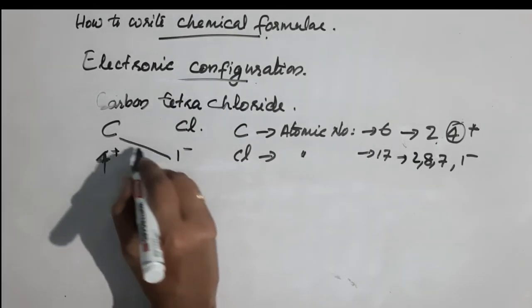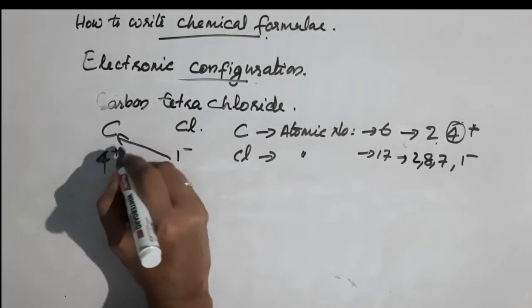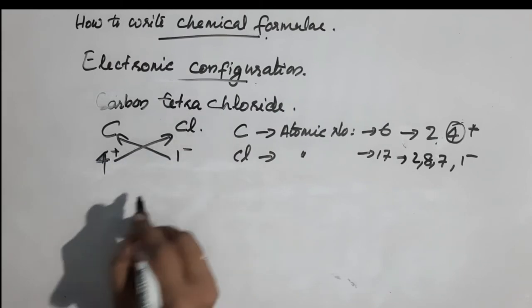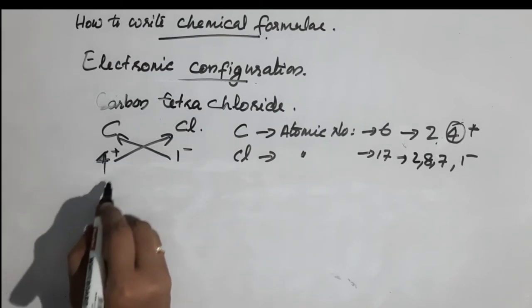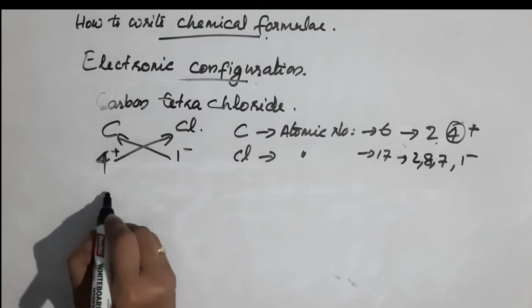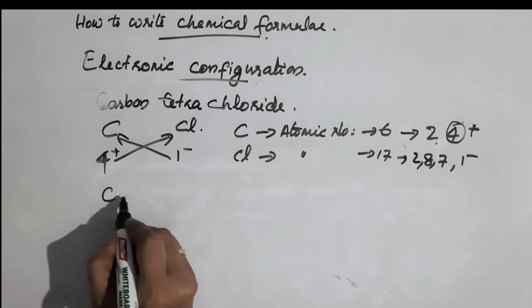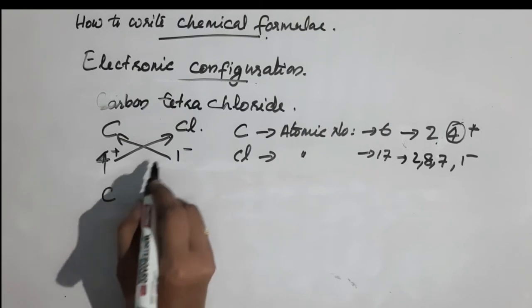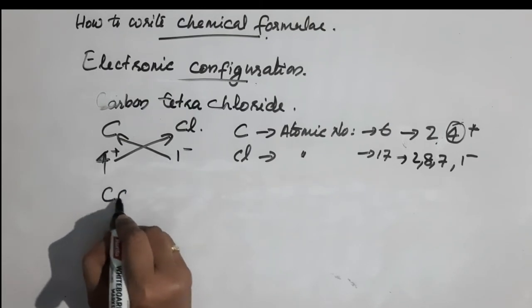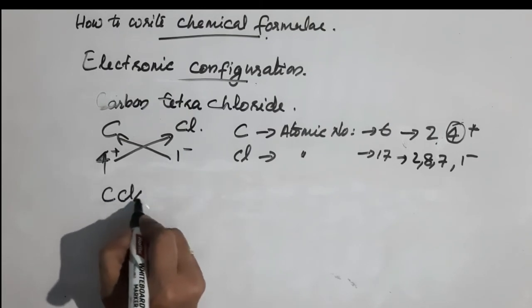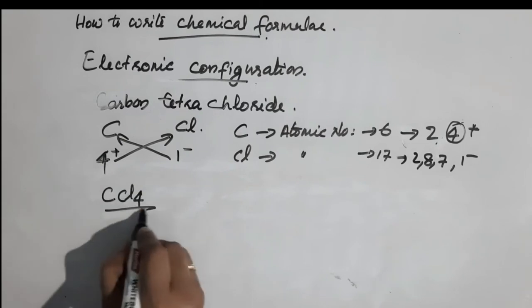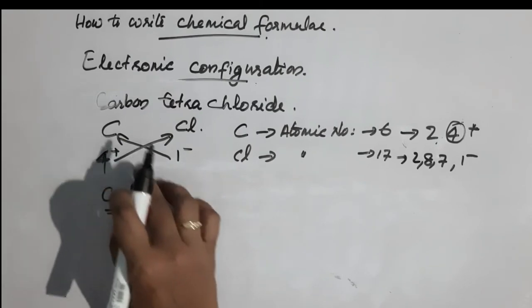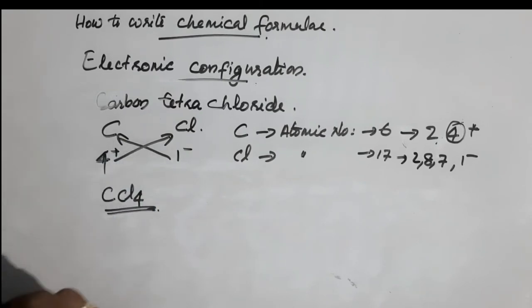Using cross multiplication, the chemical formula is CCl4 — carbon tetrachloride.